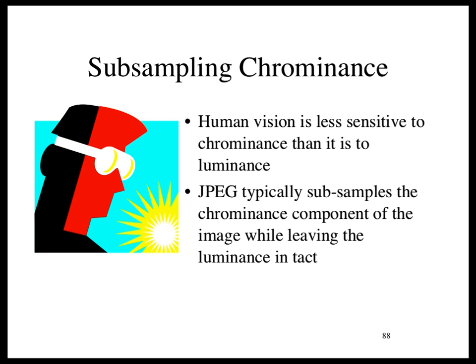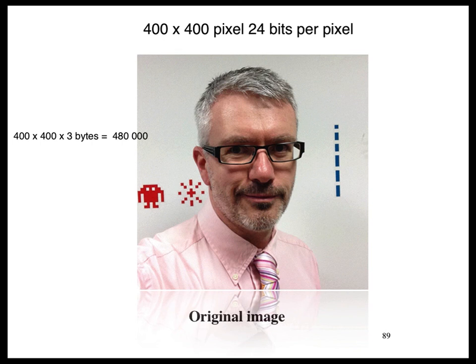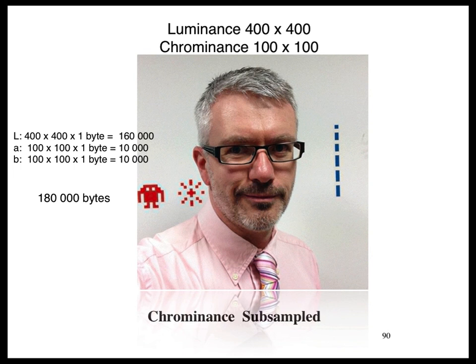Human vision is less sensitive to chrominance than to luminance. One of the tricks that JPEG uses is that it subsamples the chrominance part of the image while leaving the luminance part intact. Subsampling means you throw away some of the information. Here's a picture stored in RGB with 400 pixels at 24 bits per pixel. I then separated out the luminance and chrominance, kept the luminance intact, but threw away huge amounts of color information — three-quarters, or even 15/16ths of it.